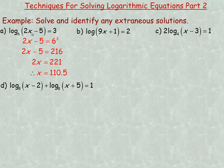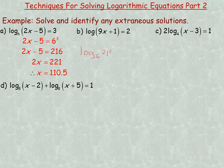You can always check any logarithmic equation by substituting what you think is the solution back into the equation to see if it makes both sides have the same value. We put 110.5 in place of x: 2 times 110.5 is 221, minus 5 is 216. So we have the logarithm base 6 of 216 equals 3, which is true because 6 raised to the power of 3 does equal 216. So 110.5 is the correct solution.